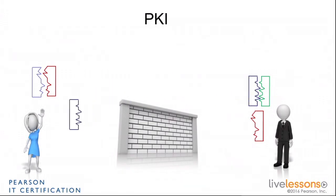Bob is going to act the same way. He's going to give his black key to Alice, and he's going to call the black key his public key. Alice is going to use that black key to encrypt traffic she wants to send to Bob. And because the black key and the green key are complementary and unique, only the green key can decrypt what the black key encrypted. So that way, Alice can send traffic to Bob in an encrypted fashion.